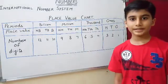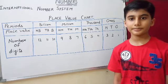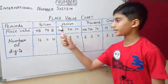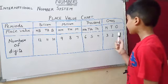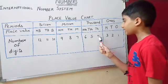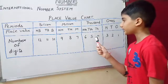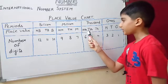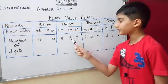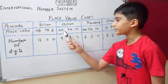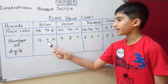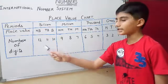Now let us see the place value chart of the international number system. There are four periods: ones, thousands, millions, and billions. In the ones place there is one digit. In the tens place there are two digits. In the hundreds place there are three digits. In the thousands place there are four digits. In the ten-thousands place there are five digits. In the hundred-thousands place there are six digits. In the millions place there are seven digits. In the hundred-millions place there are nine digits. In the billions place there are ten digits. In the ten-billions place there are eleven digits. In the hundred-billions place there are twelve digits.